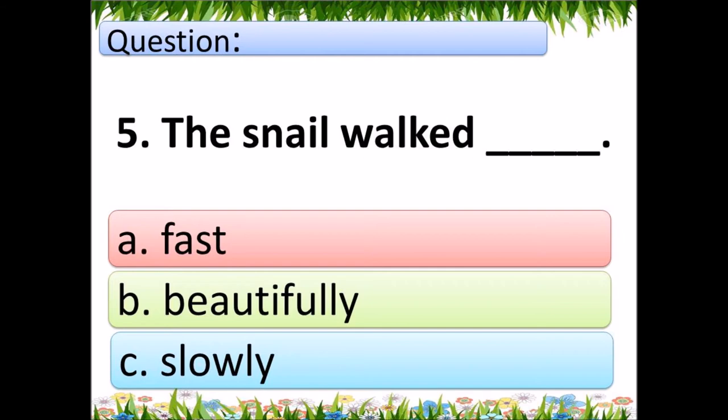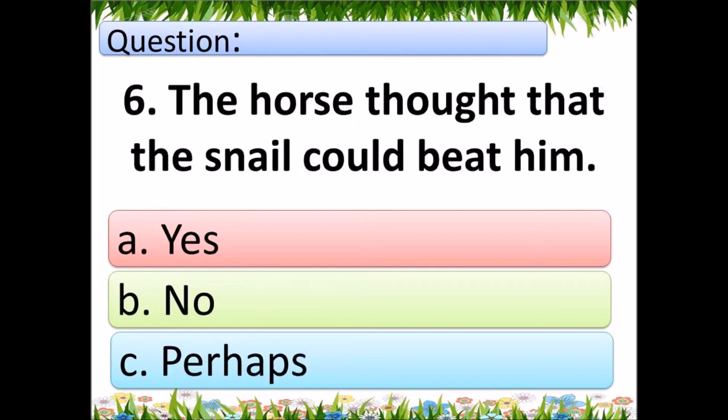Five. The snail walked blank. A. fast, B. beautifully, C. slowly. Six. The horse thought that the snail could beat him. A. yes, B. no, C. perhaps.